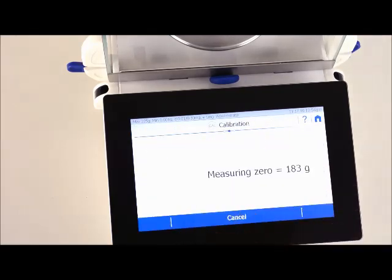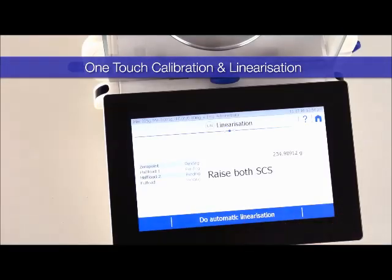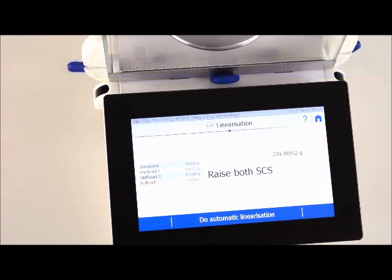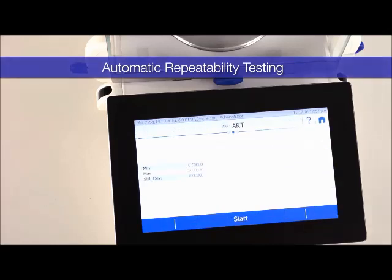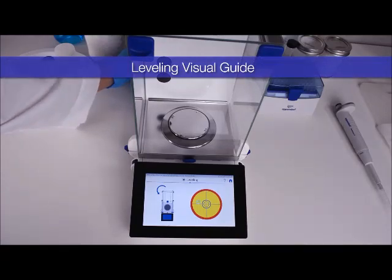All these actions can be accessed by swiping to the right and selecting the corresponding app. Calibration takes only one touch, as does linearization with the self linearization system. You can test repeatability with the automatic repeatability test app.